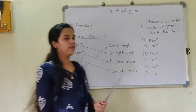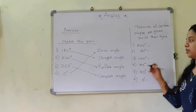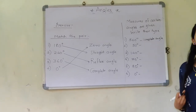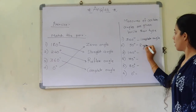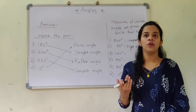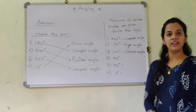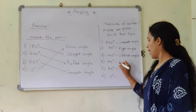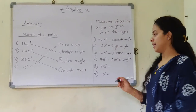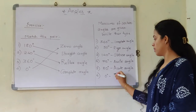They have given you measures of certain angles and asked you to write their names. 360 degrees means complete angle. 90 degrees is the right angle. 140 degrees is more than 90 and less than 180, so it is obtuse angle. 75 degrees is an acute angle. 80 degrees is also less than 90, so it is also an acute angle. 0 degrees is said to be a zero angle.